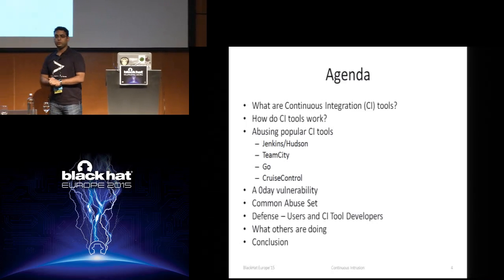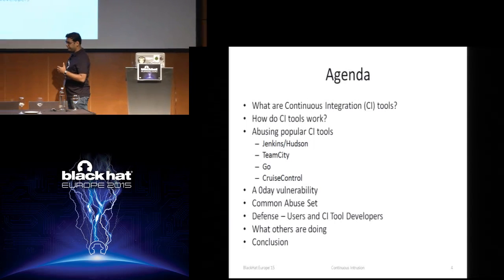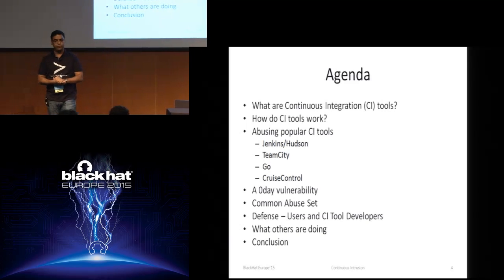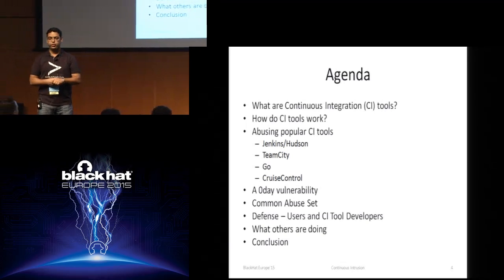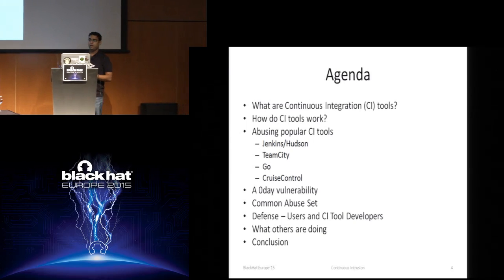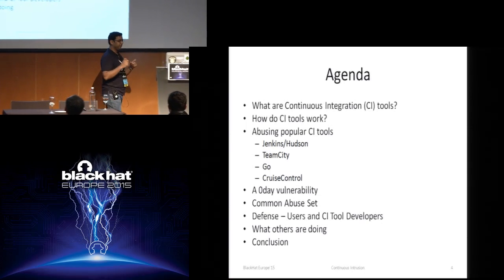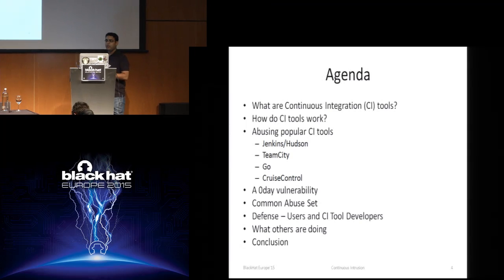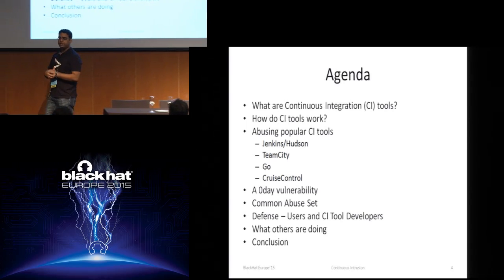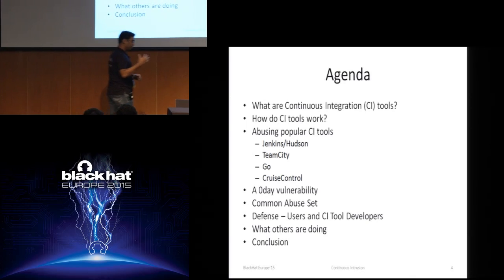In this talk, we are going to discuss a lot of things. We will see what continuous integration tools are and why they are useful for us. Hopefully with live demonstrations, we'll abuse some of the most popular CI tools like Jenkins, TeamCity, and Go. No demonstrations for Cruise Control — it's really old now. Then we'll see a zero-day vulnerability, the Java deserialization bug, which was sitting idle for nine months. And then we'll see a common abuse set for all the CI tools — what misconfigurations or common features or design flaws most CI tools share.